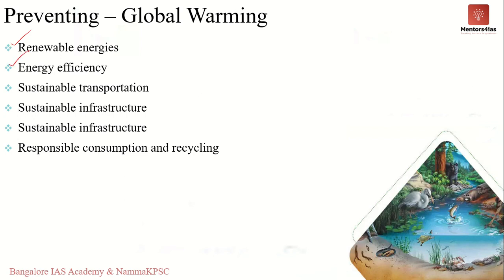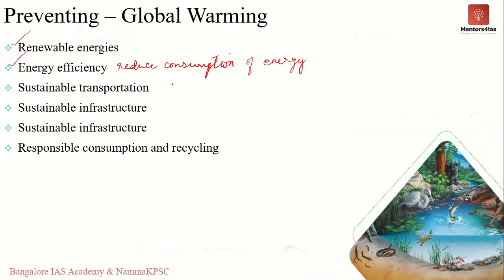The next measure is energy efficiency. As we shift away from fossil fuels, we must use clean energy and also reduce energy consumption. There has to be an increase in the efficiency of energy production and energy use so that we can completely rely on renewable sources of energy. This shift has to be permanent.